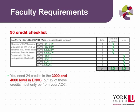This slide shows the Faculty Requirements for the 90 credit checklist. For this section, you need to list 24 credits of ENVS courses at the 3000 or 4000 levels. 12 of these credits must be taken from the Management Area of Concentration. The remainder of the courses must be ENVS courses at the 3000 or 4000 level from any area of concentration. Make sure you only list the course codes and not the full course names, as well as the credit values, in the appropriate Completed or To Do columns.